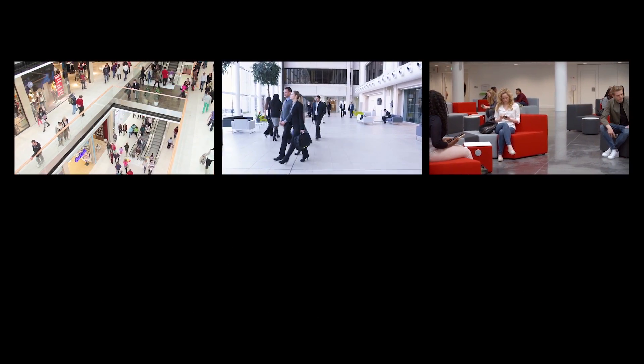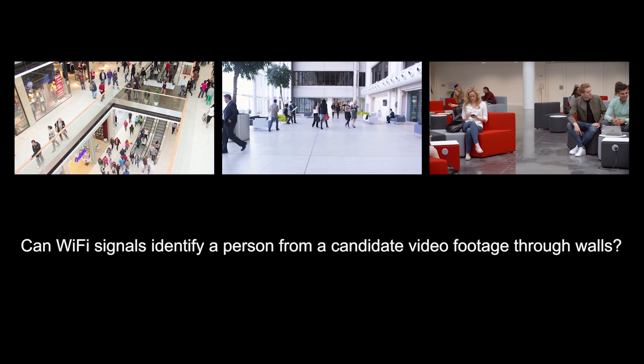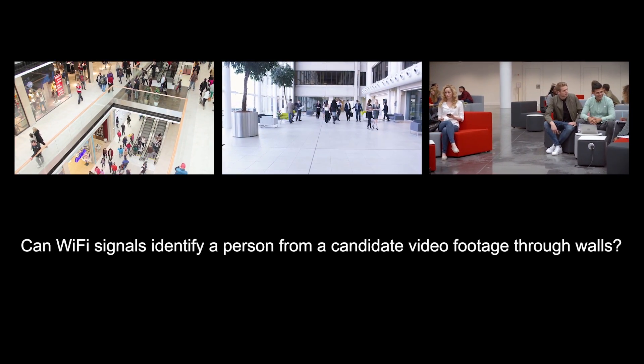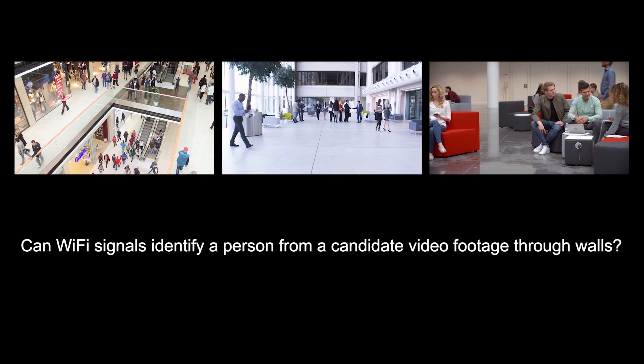Wi-Fi signals are everywhere these days. Can they do more than communication? For instance, can they identify a person from a candidate video footage through walls?